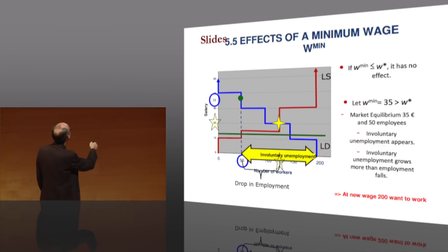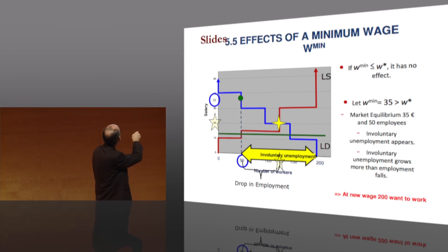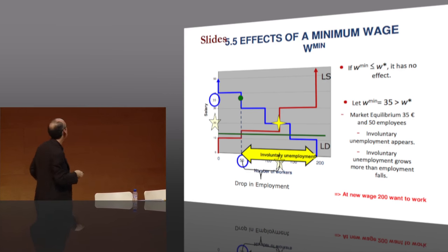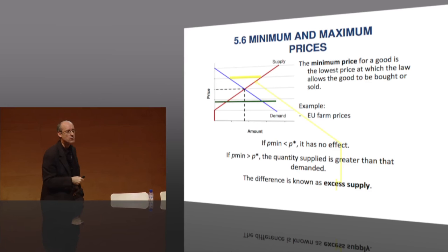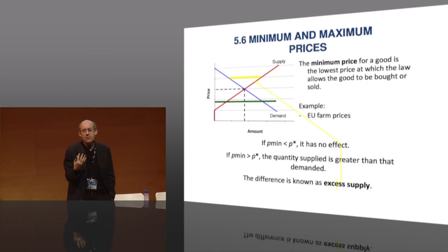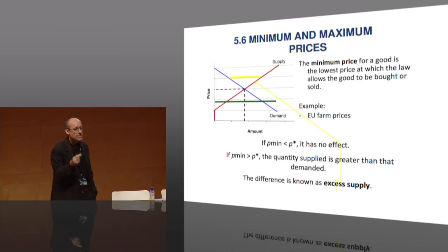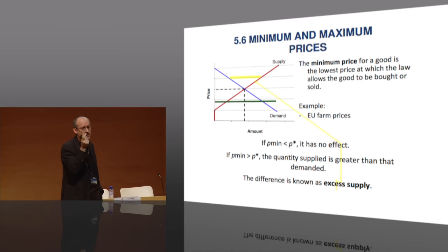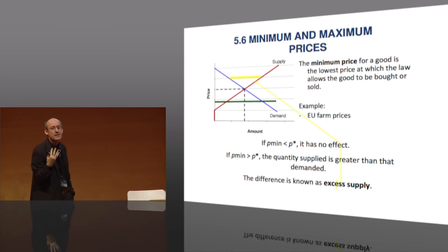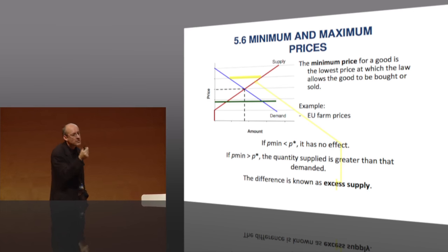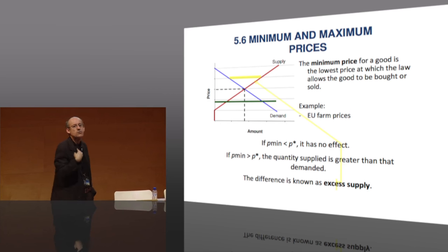We have slides that explain everything — first with step functions, because it's a small market with few people, and then you make the jump from the step function to the continuous function. This is really useful because students get a good idea of what a point on a curve means. When I studied, demand was just a line going down. But understanding that every point on a curve is really a person with a particular valuation — that takes time to assimilate, as does the concept of equilibrium and what it means that not everybody will buy exactly at the equilibrium price. This naturally comes from running the experiment.